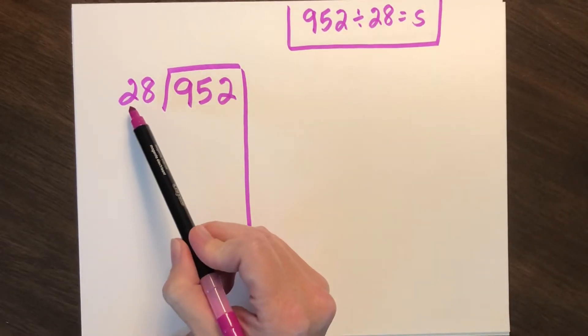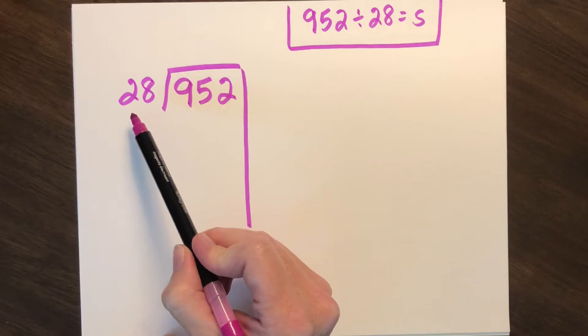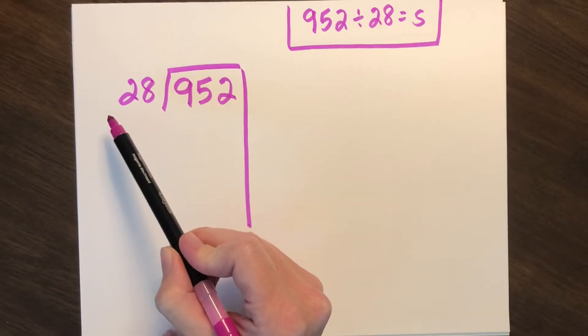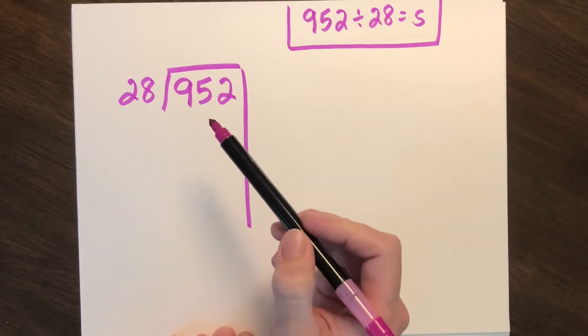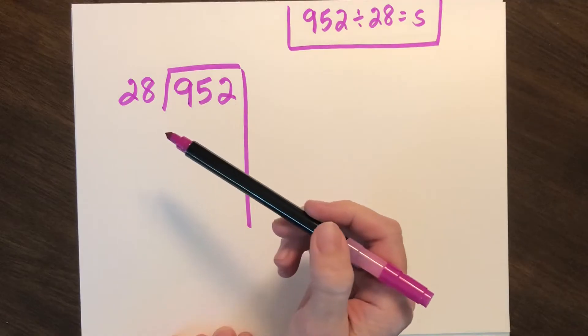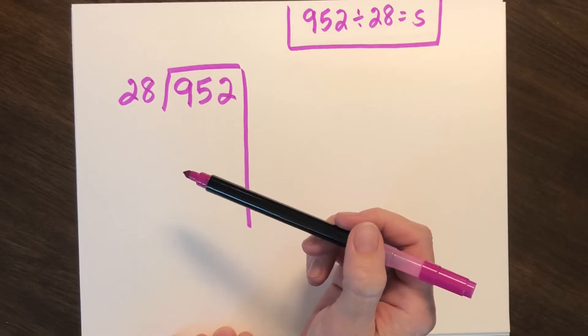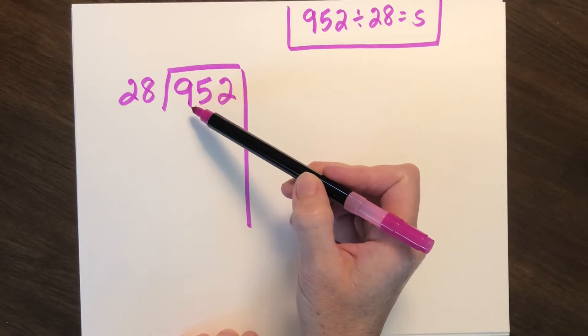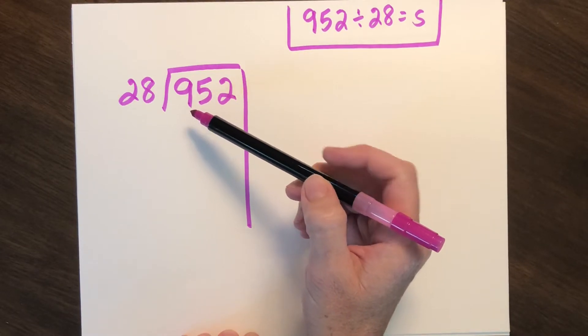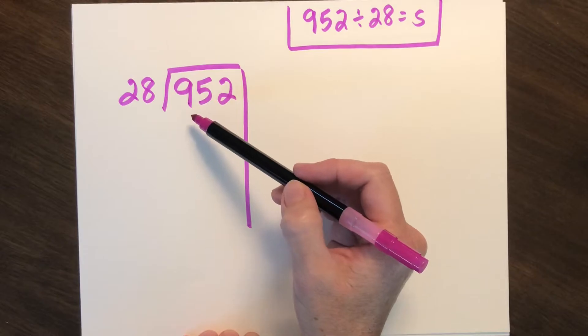Just as we do with a one-digit divisor, we're going to be using our friendly multiples, multiples that we can typically do using mental math. I often like to use friendly multiples such as 2, 5, or 10, and I also need to be looking at the place value, the largest place value, so I can be considering which multiple would fit best.